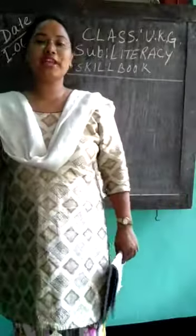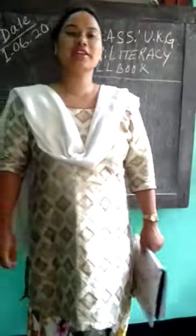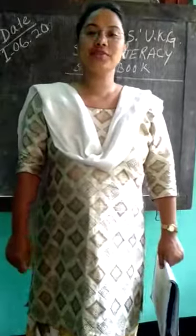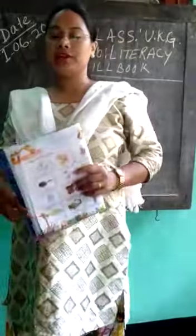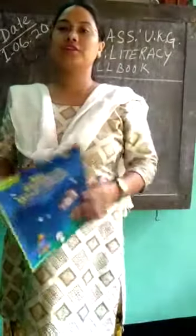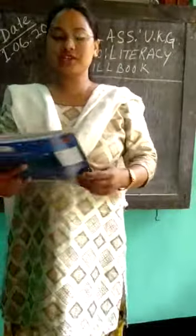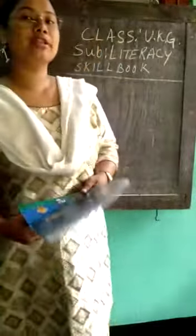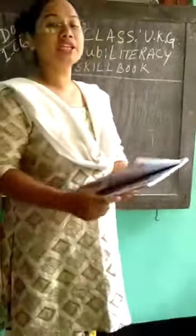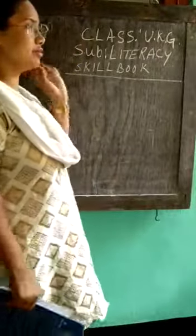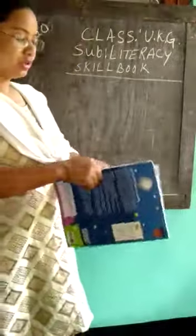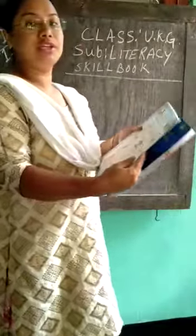Welcome back to our YouTube channel of Morrigan English Academy School. Today we are going to learn from the Literacy Skill Book — that means the English Main Book. The subject is Literacy Skill Book. Please turn to page number 19.